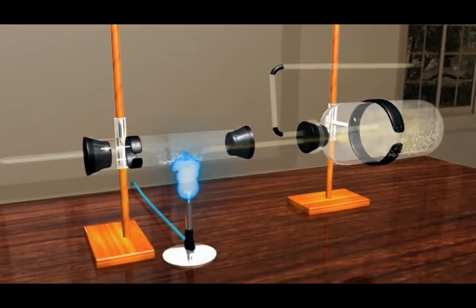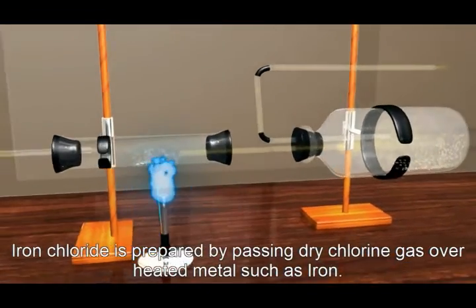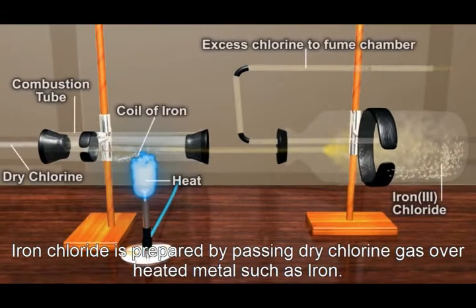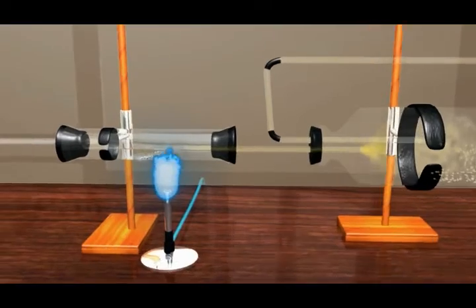Preparation of iron chloride. Iron chloride is prepared by passing dry chlorine gas over heated metals such as iron. Following is the reaction for preparation of iron chloride.